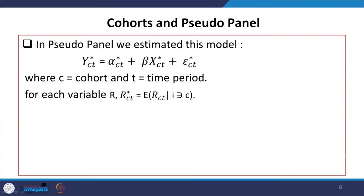In pseudo-panel, we estimate with the cohort component instead of the individual component. C stands for cohort and T is the time dimension for each variable. We are basically looking at R and RCT, where C stands for cohort and T for time variation, and accordingly we will estimate the R value based on these two components.